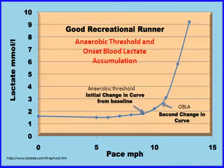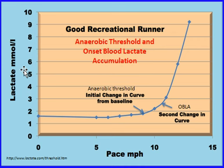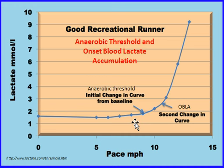Hi students. I just thought we'd quickly discuss anaerobic threshold and onset of blood lactic accumulation. First of all, the graph — up the side we have lactate in millimoles per litre of blood, and across the bottom we have the speed of the athlete running. The blue line shows the increase of lactate in the blood as the athlete's speed increases.